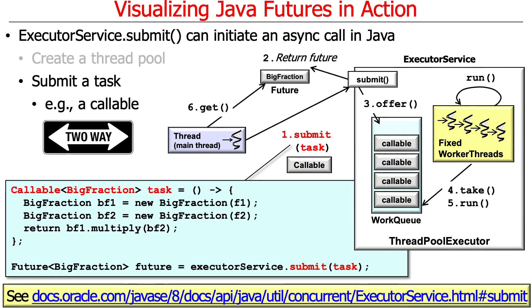When you submit a task, you can do it in a two-way asynchronous manner. You submit the task; the task is an instance of Callable. Here's an example using a callable lambda — a task that will basically multiply two big fractions and return a big fraction result. We make an instance of the task and submit it to the executor service.